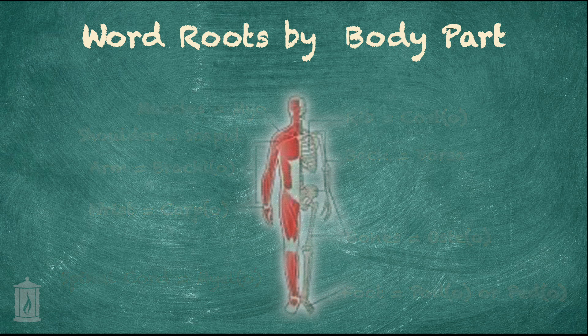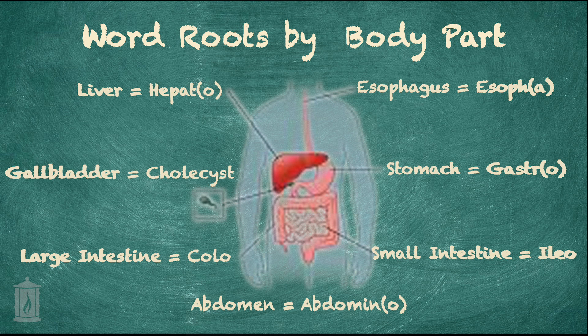Looking at our digestive organs, the stomach is signified by gastro. You've probably heard of gastric, pertaining to the stomach, or gastric bypass — one of the many surgeries that can involve the stomach. We also have the liver, which is hepat or hepato. Hepatitis would be inflammation of the liver, and it can occur either virally or due to drugs, alcohol, or many other things that can cause enlargement and inflammation of the liver.